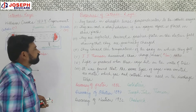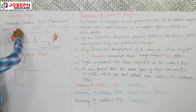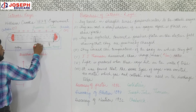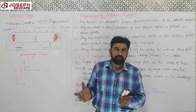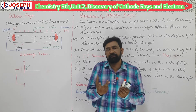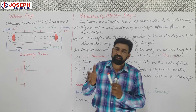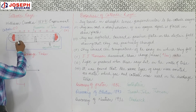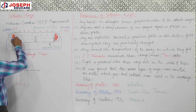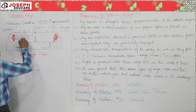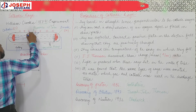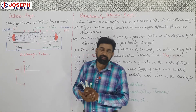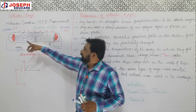They are deflected towards the positive plate. What was done? Magnetic and electric fields were applied on both sides — for example, here is a positive plate and here is a negative plate. We know opposite charges attract and like charges repel. When the experiment was performed again, these rays were deflected towards the positive pole. This means their nature is negative, because they are attracted toward the positive plate and their charge is opposite to it.